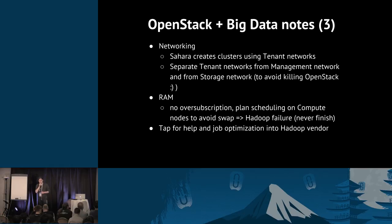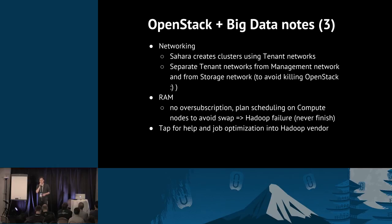On the networking side, Sahara uses tenant networks when provisioning big data clusters with Hadoop, so make sure you separate not only storage but also tenant networks on different physical NICs if possible — nobody likes killing OpenStack by placing too much load from Hadoop. On RAM: do not over-subscribe. If you over-subscribe CPU, it will just get slow; if you over-subscribe RAM, workloads will never finish. Last but not least, even with all these practices, you may still run into poor performance — for real production workloads you will likely need consulting from your big data vendor, whether Hortonworks, Cloudera, MapR, or others. The OpenStack side can optimize for more or less generic Hadoop usage, but performance will depend heavily on the specific workloads you run.